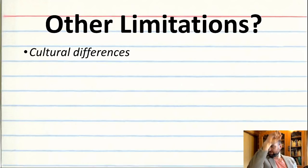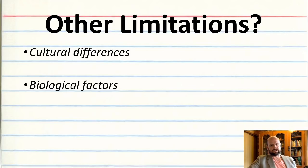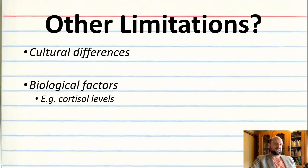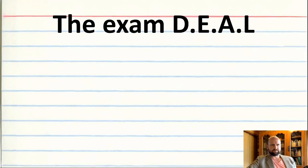Other limitations include cultural differences — depending on cultural values like individualism versus collectivism, people may have different rates of forming flashbulb memories because of differences in emotion experienced and the role of rehearsal. There are also biological factors: cortisol, a stress hormone released in moments of high emotion, affects memory formation. Individual differences in cortisol levels could change the formation of flashbulb memories, though this could also be seen as supporting the original neurophysiological hypothesis.